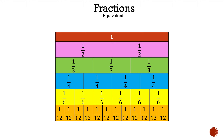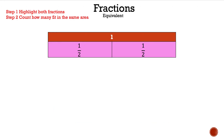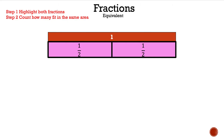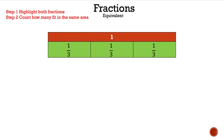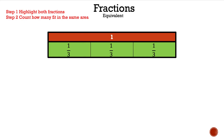Now let's go ahead and compare one to each fraction. We'll start with the halves and count how many halves are in one whole: one, two — so there are two equal parts to get one whole. Now comparing one to the thirds: one, two, three — there are three equal parts to get one.